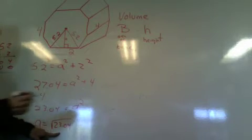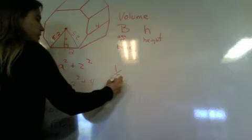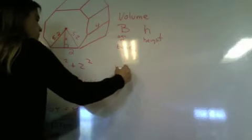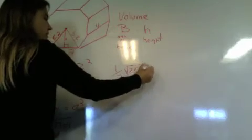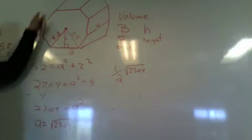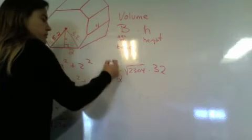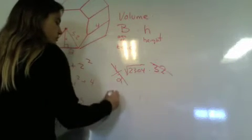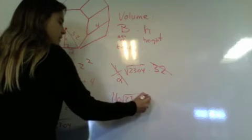So then what's our formula for the area of a polygon? One half what? One half times the apothem times the what? Perimeter. Times the perimeter. What's the perimeter? 32. So half of 32, 16. So 16 square root of 23.04. That's the area of the base.